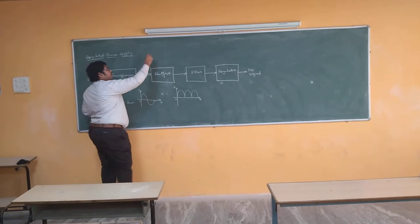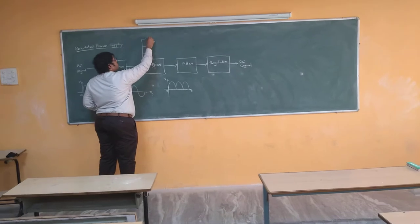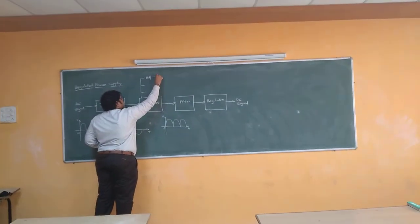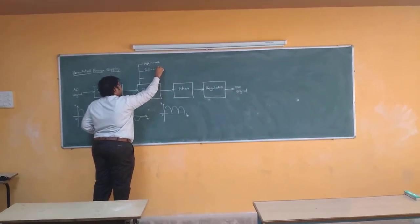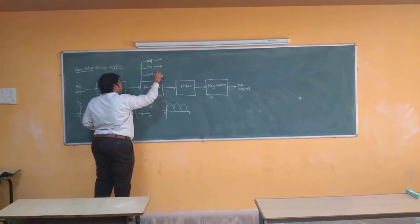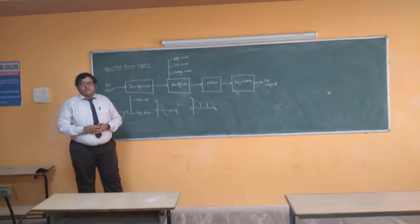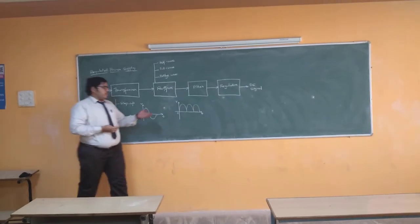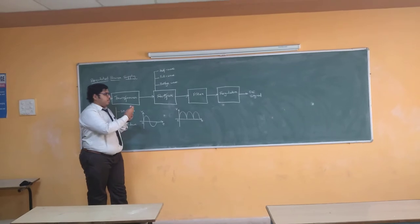For rectification, we have three more classifications: we have a half-wave rectifier, a full-wave rectifier, and a bridge-wave rectifier. Using these three classifications, we can convert the AC signal into a pulsating DC.